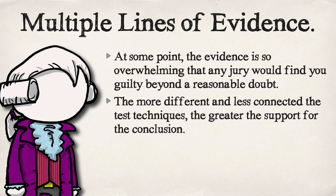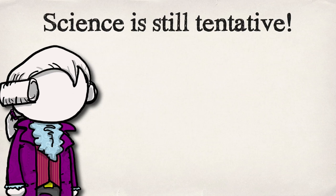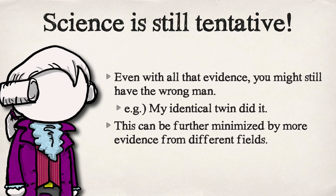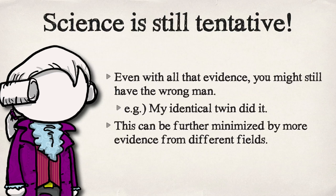The more lines of evidence you have, the greater the strength of the conclusion. But science is still tentative — even if you have all that evidence it still theoretically could be wrong. Maybe I didn't commit the crime; I have an identical twin with my blood type and my DNA. If you're clever enough you could make tests that would eliminate that possibility, like checking for fingerprints.